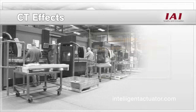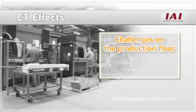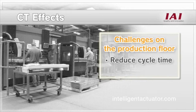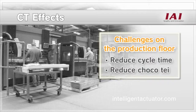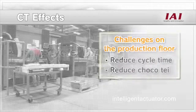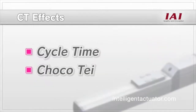One key to automation and productivity improvement is reducing cycle time and chocote. This effect is called CT effects, using the initial letters from cycle time and chocote.